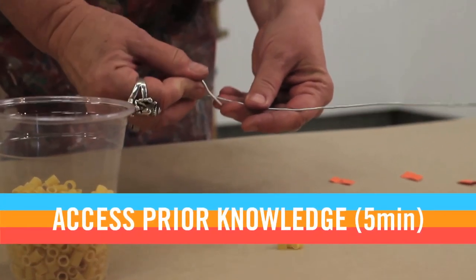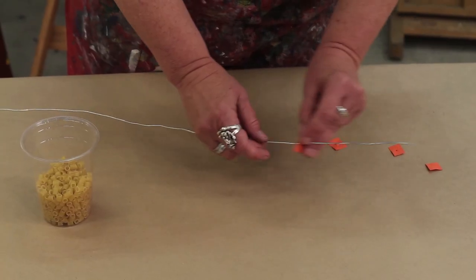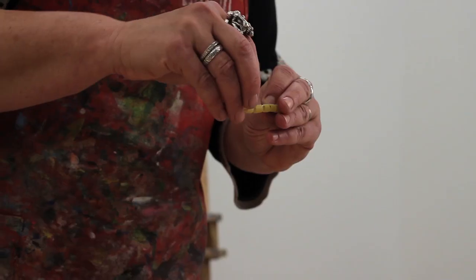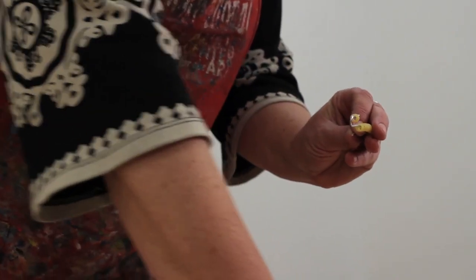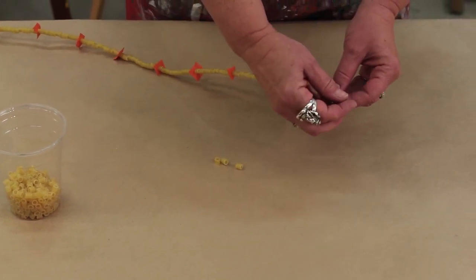On to session two, but first, let's access prior knowledge. Ask your class questions like, who can summarize what we did last week? How can you create a sculpture that represents a three digit number? What do you know about the way artists and mathematicians use systems?